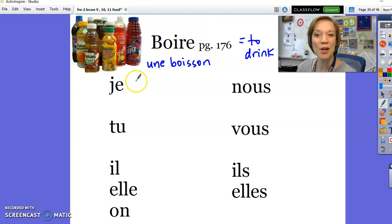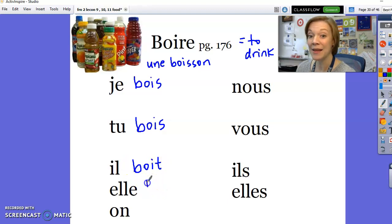Here's the conjugation. Je bois. Tu bois. Il boit. Elle boit. On boit. Bois, bois, bois, bois, bois. There it is.